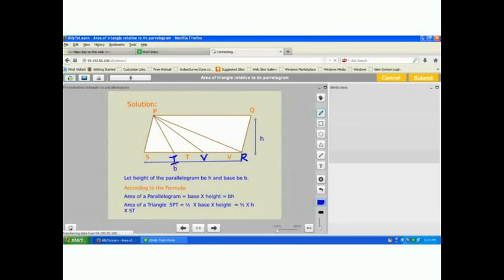Area of the triangle SPT is equal to half into base into height. So here I am getting half into H into ST. We don't know ST, so to find out ST, we proceed in this way.